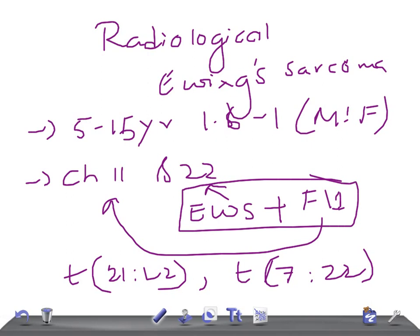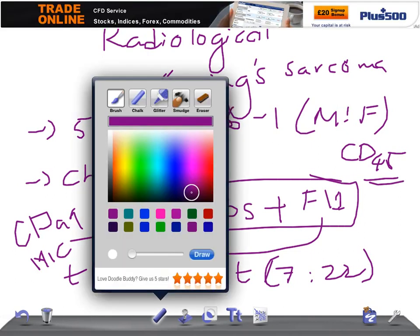Some Ewing's sarcoma cells are positive for CD99 and MIC2, and they are negative for CD45. Remember, very important: positive for CD99 and MIC2, negative for CD45. I'm not going to discuss the clinical symptoms here. I'm going to talk about the radiological features.